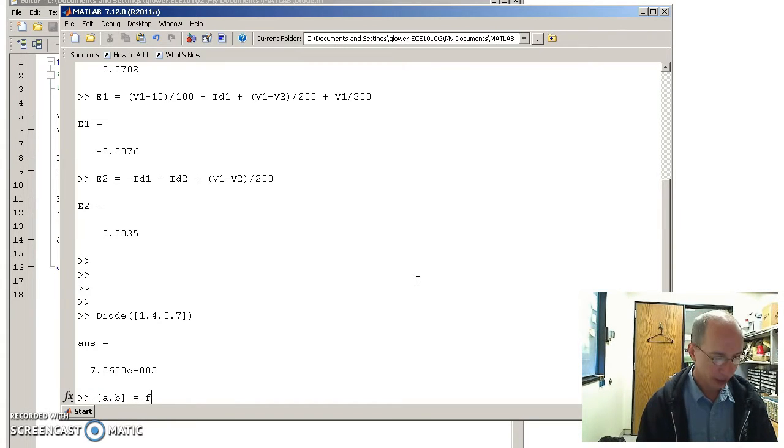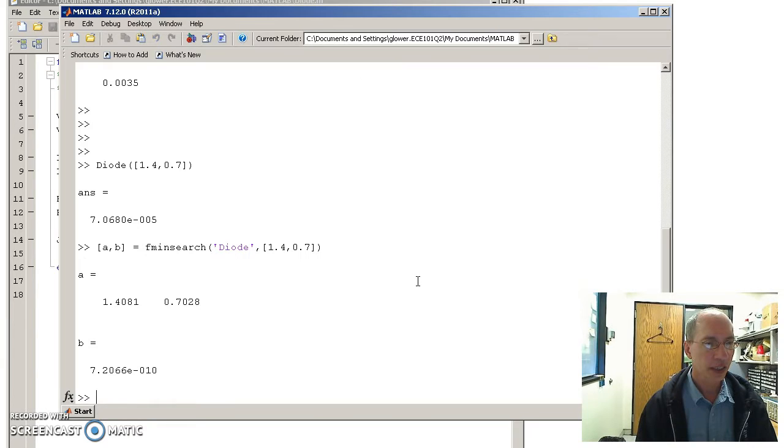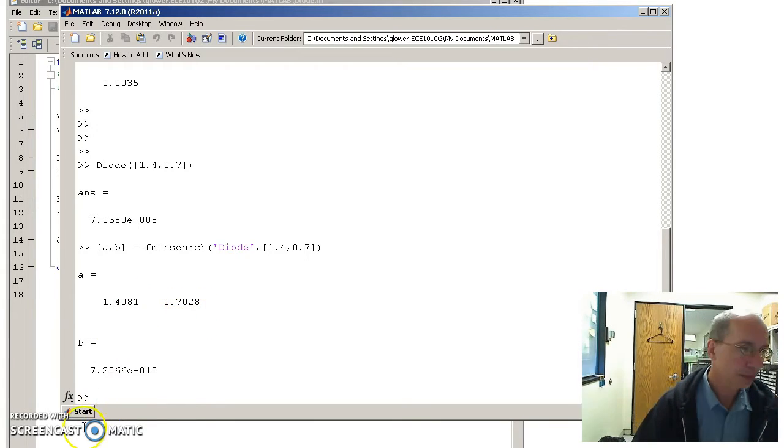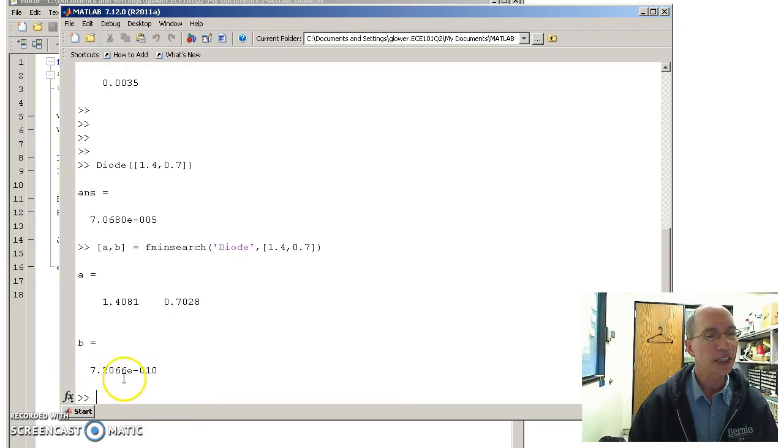I'll say the result is fminsearch. Minimize this function with the following initial guess. It iterates and it says this is the best you can do: 1.408 volts and 0.702 volts. The second number says how close the answer is to 0. So apparently the voltage is 1.4 volts, 0.702 volts.